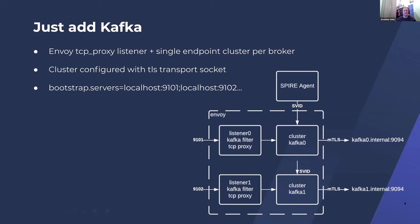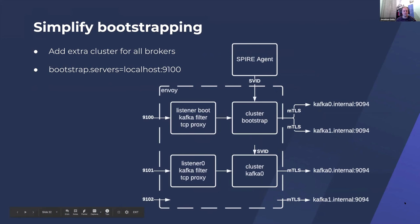By adding another listener with a cluster that has an endpoint for every single broker, you have a listener — for example on port 9100 — that will connect you to any one of the brokers. That broker returns the cluster metadata containing the advertised listeners for the rest of the cluster, giving the client all the individual ports it needs. This means the configuration is as simple as a single port in the bootstrap servers for each client, now completely oblivious to how many brokers are behind each bootstrap port.